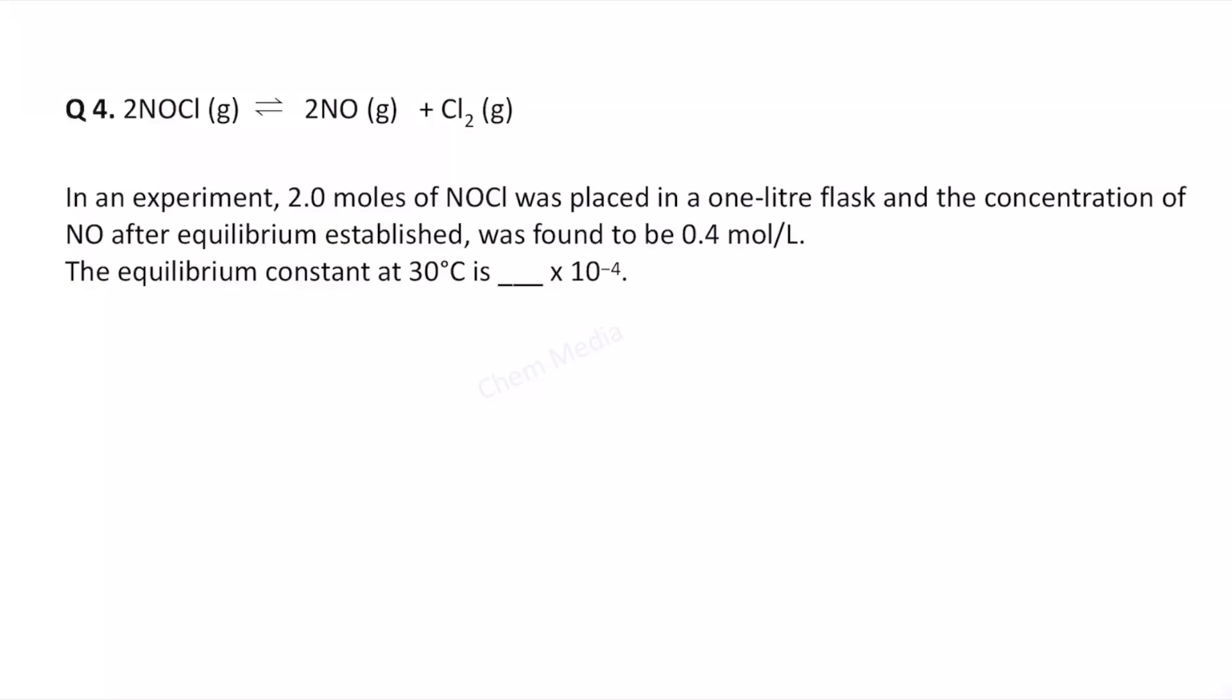Hello everyone, here is a question from Chemical Equilibrium. In an experiment, 2 moles of nitrosyl chloride was placed in a 1 liter flask and the concentration of nitric oxide after equilibrium established was found to be 0.4 molar. What is the equilibrium constant value at 30 degrees centigrade?